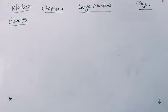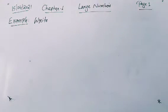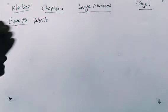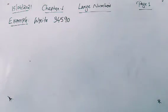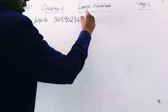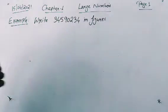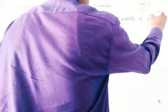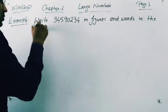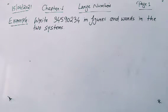This example you can also see on page number 7 of your book. So write. The number is 34590234 — in figures and words in the two systems. Two systems means based on the Indian place value system and also based on the international place value system.